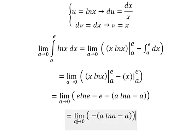So now when a approaches zero, this one will go to zero. This one will go to negative infinity. Negative infinity times zero gives you zero.